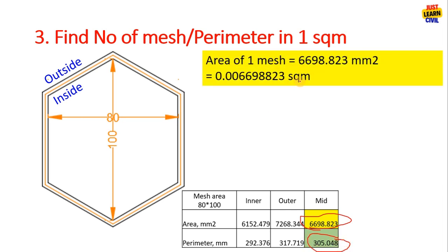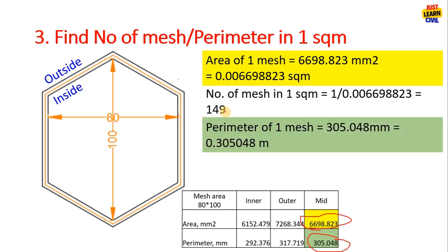When area converted to square meter we have 0.006698823 sqm. Now using the unitary method you can find the number of mesh, that is 1 divided by area of one mesh equals 149 number of mesh in one square meter and we know the perimeter is 0.305048 m.